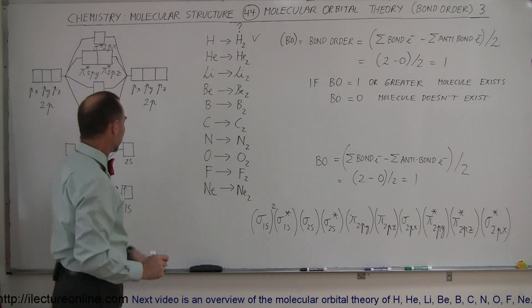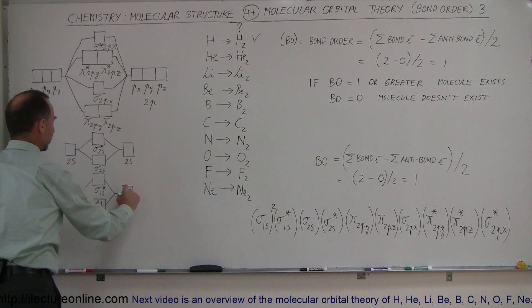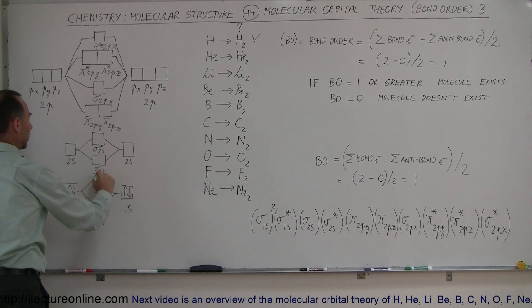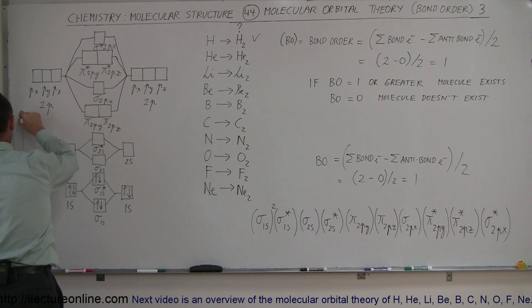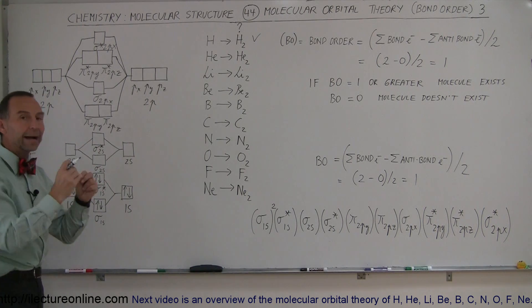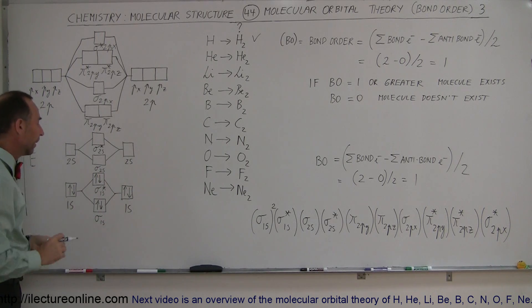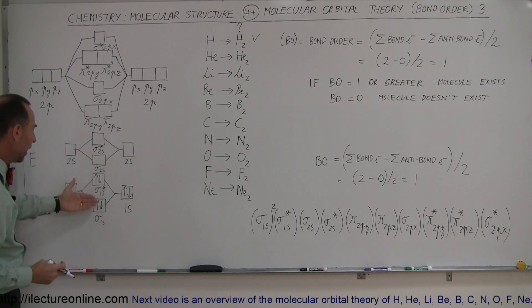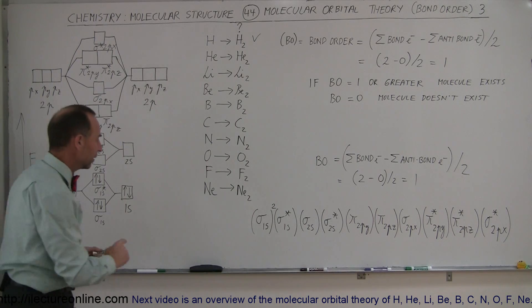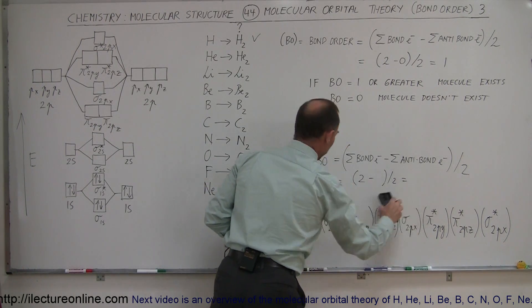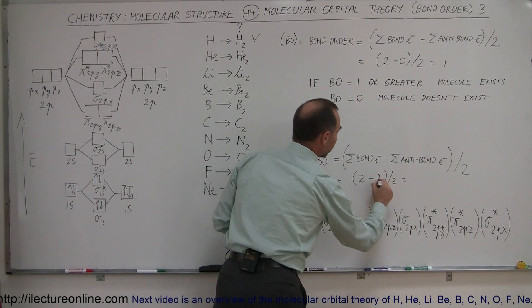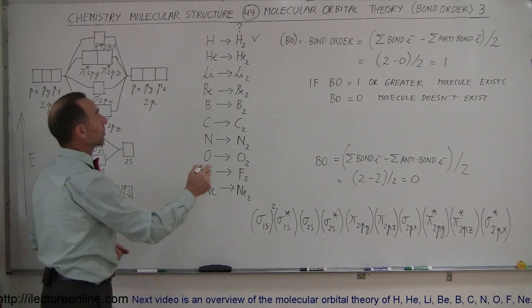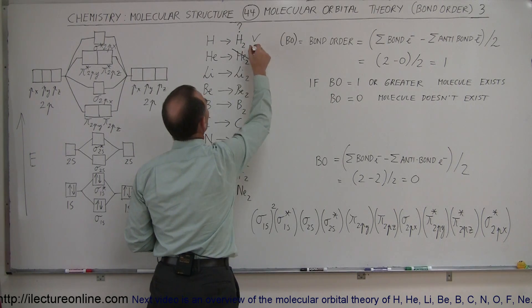Going on to helium: we add an additional electron in each of the two s orbitals, so now we have four electrons — two end up in the bonding orbital and two end up in the anti-bonding orbital. Notice that energy goes up as we move higher. One pair makes a bond, one pair makes an anti-bond; they cancel each other out. Plugging into the equation: two electrons bonding minus two electrons anti-bonding, divided by two, equals zero. Bond order of zero means this molecule will not exist.